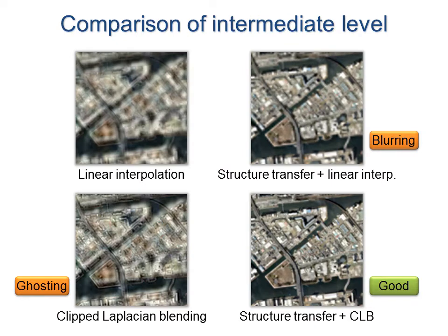Here is a comparison of blending results at an intermediate resolution level. Linear interpolation alone gives very poor results. Structure transfer reduces ghosting, but blurring remains. Applying just clip-laplacian blending removes some blur, but ghosting remains. Applying both techniques together gives excellent results.